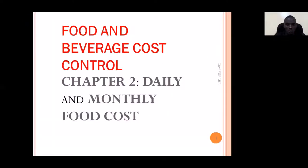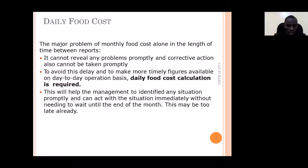At the end of this chapter, we will be able to identify formulas, and we shall look at factors that cause variations in food cost. We shall also be able to see how to get the daily food cost and monthly food cost, and even how you can report — how the report looks and what elements or concepts are in the monthly report.